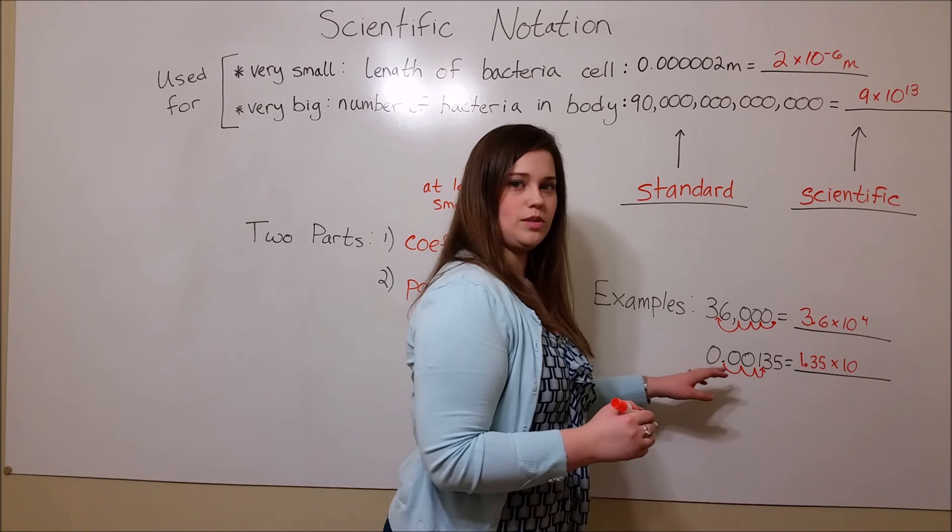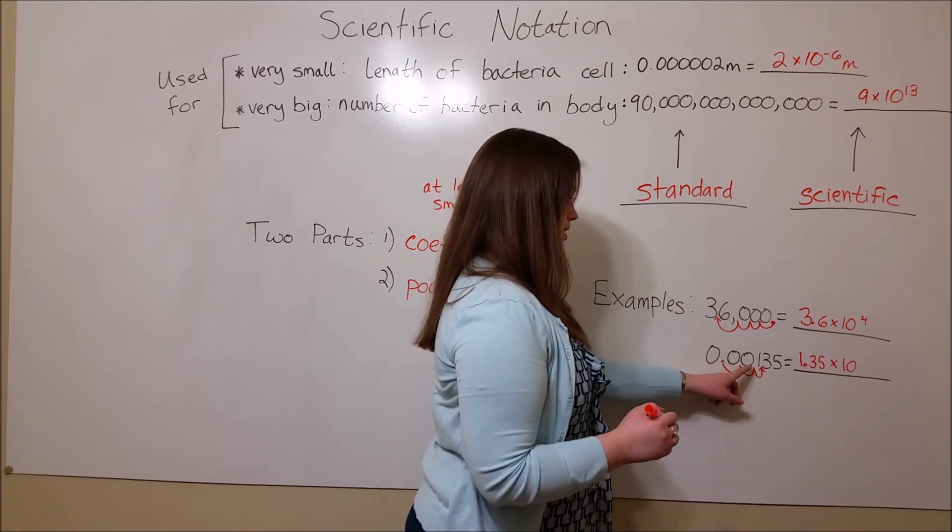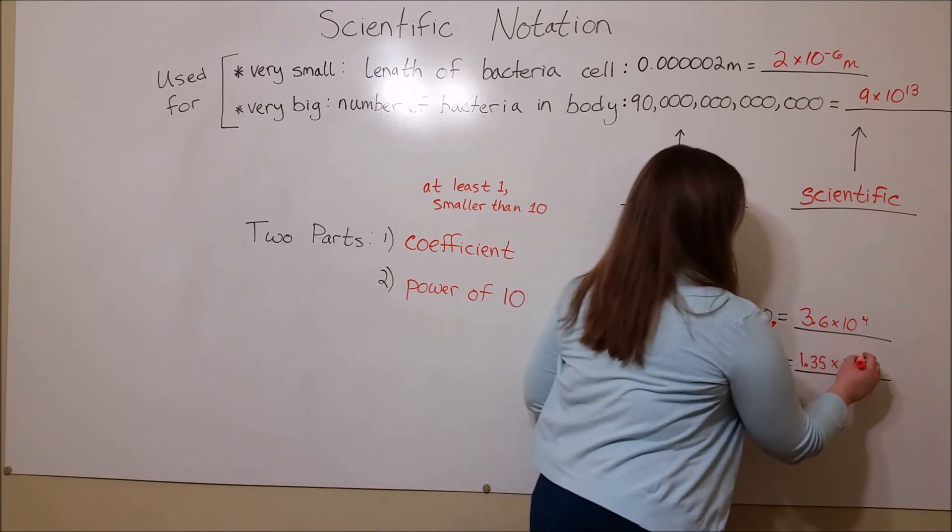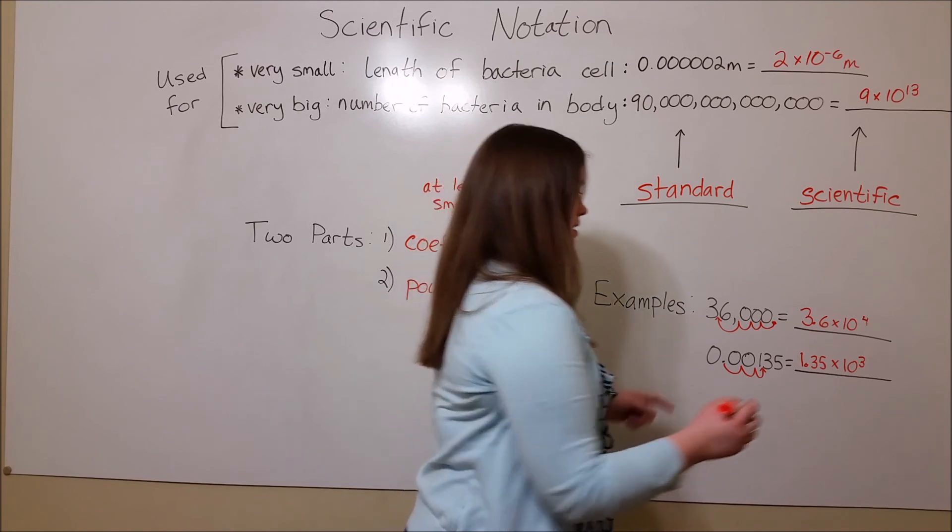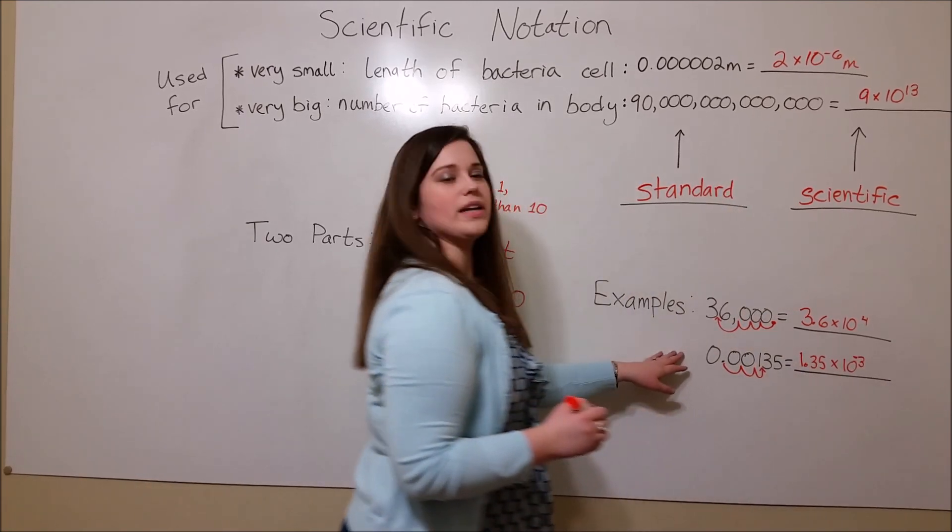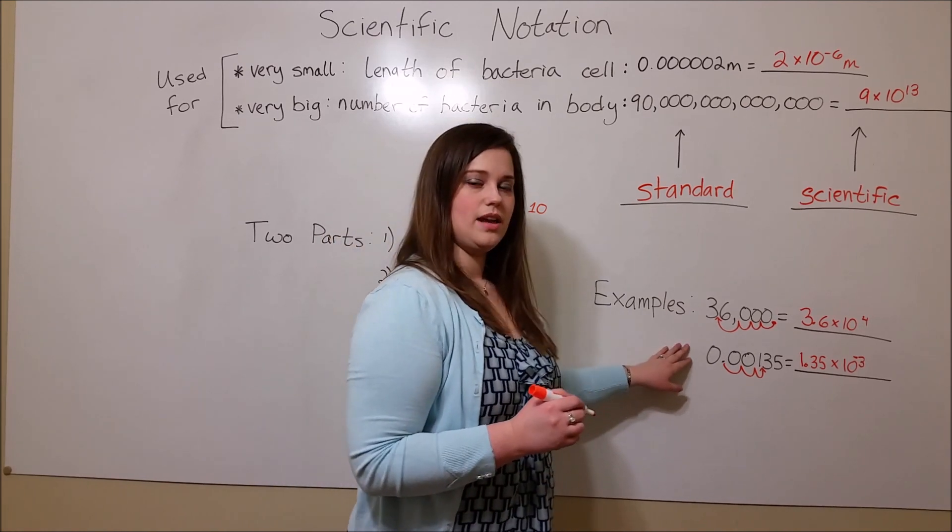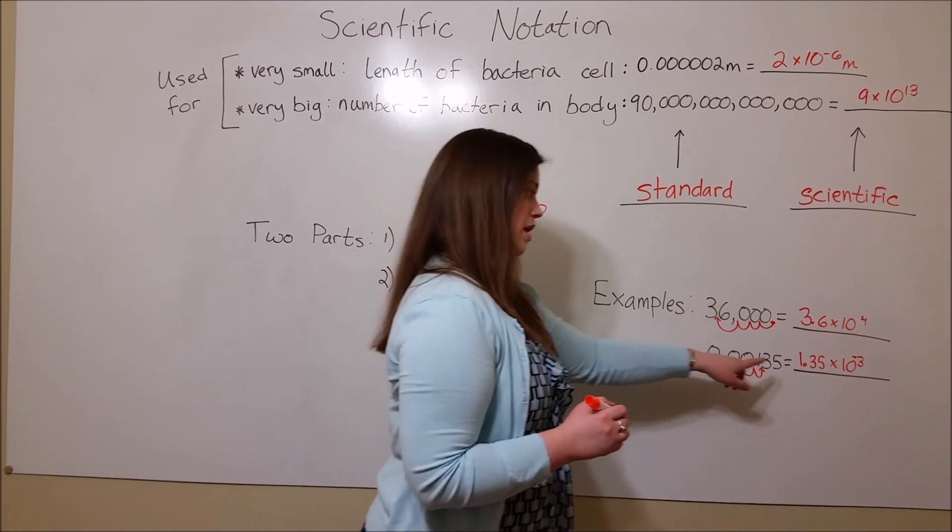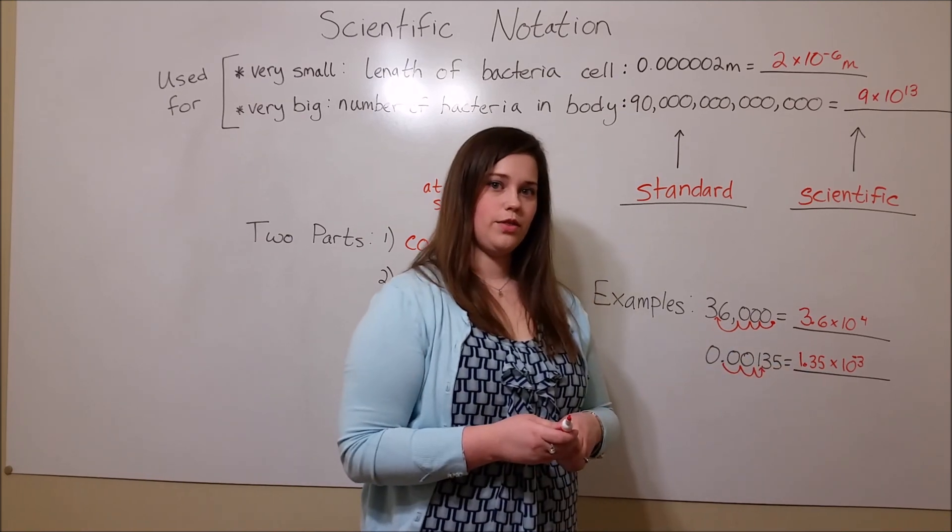And here we double check the places that the decimal moved. 1, 2, 3 places. But here, because this is a small number, smaller than 1, this exponent has a negative sign. So 0.00135 is the standard notation. The scientific notation for the same number is 1.35 times 10 to the negative 3.